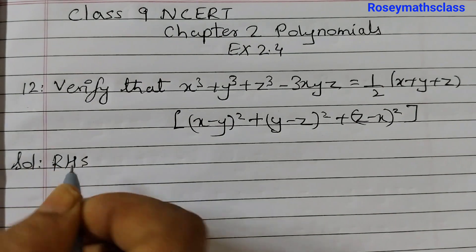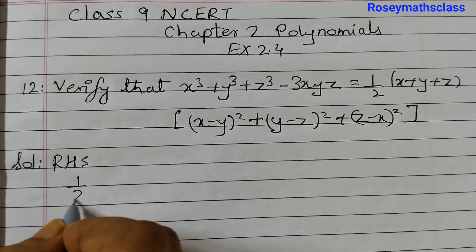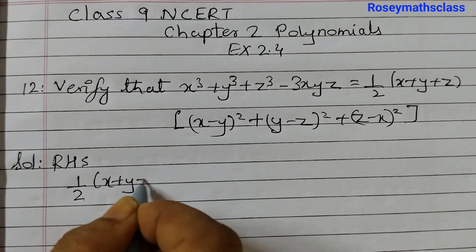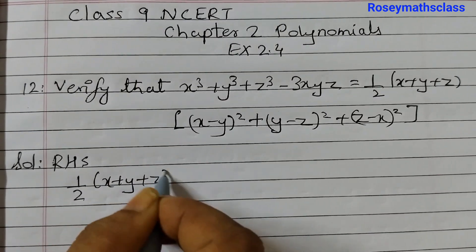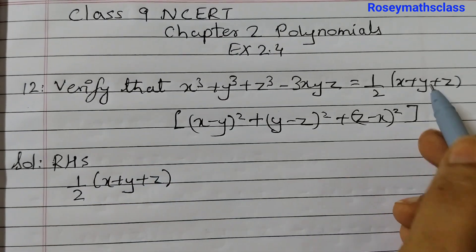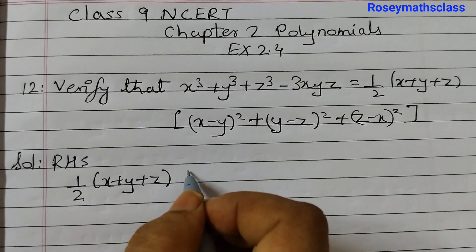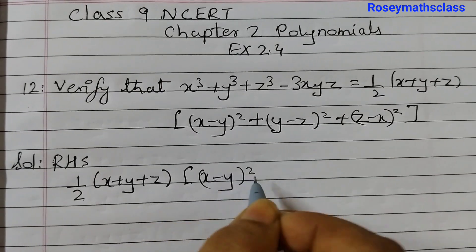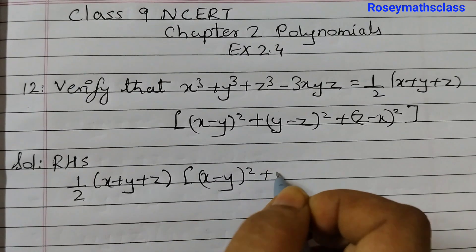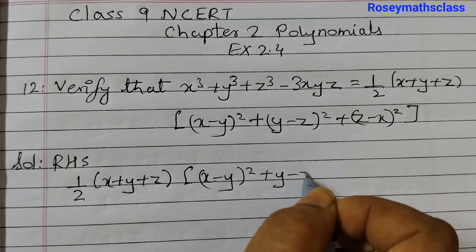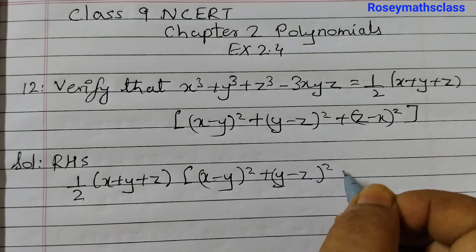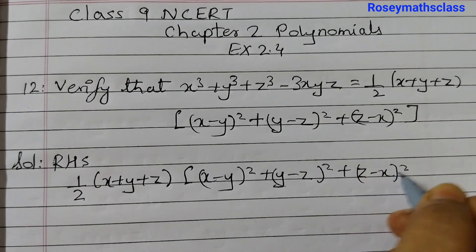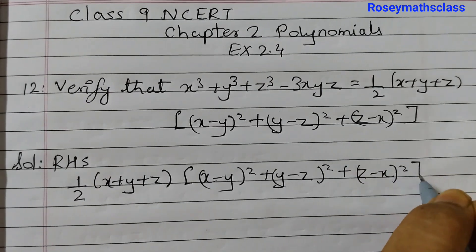RHS is 1 half into x plus y plus z, into x minus y whole squared plus y minus z whole squared plus z minus x whole squared.